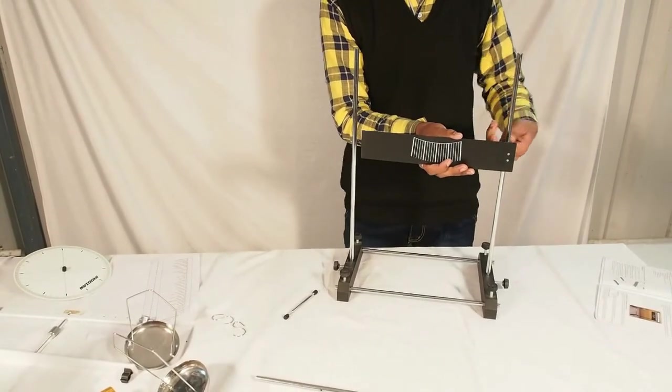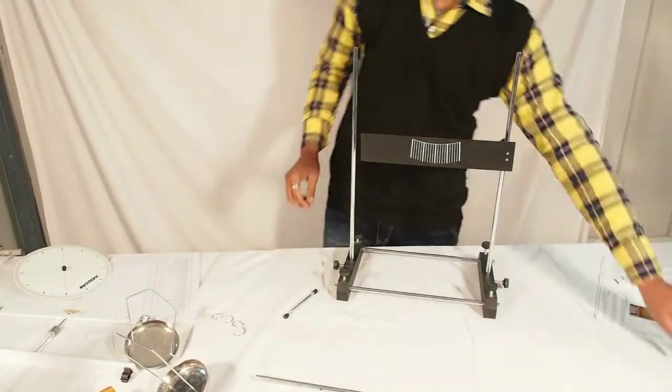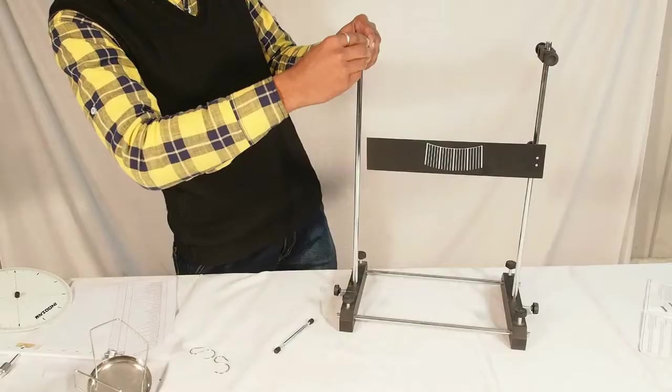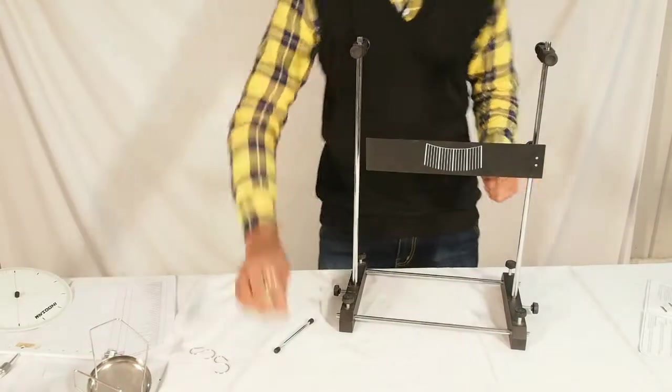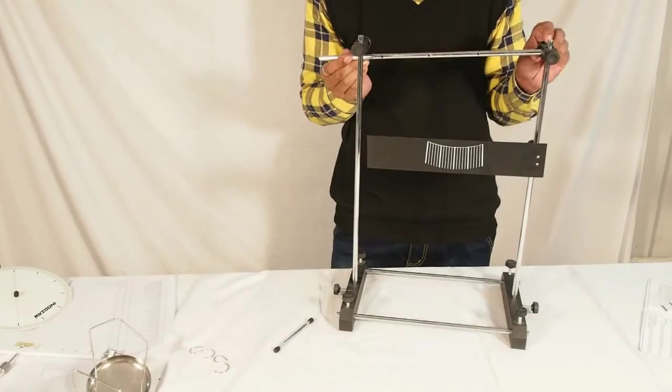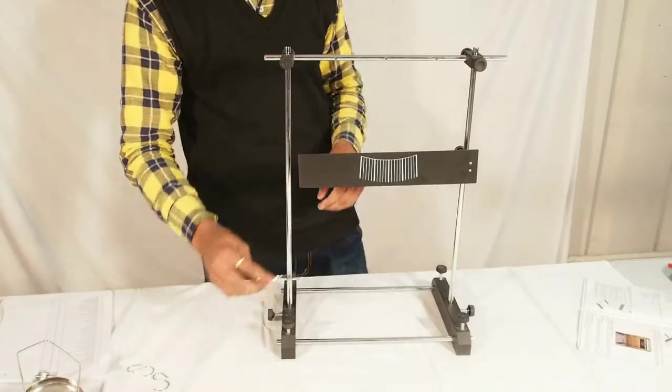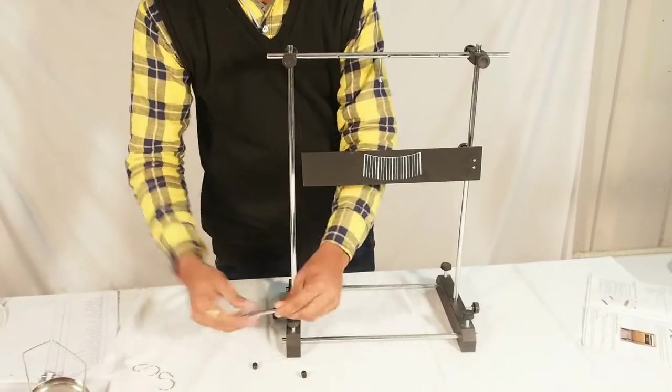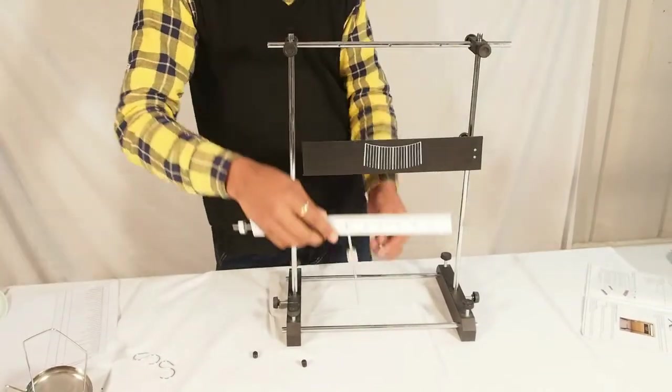Attach the double scale with boss head to the right hand rod. The height is not important, it can be adjusted later. Attach two boss heads to the top of the two rods. Now place the 40 centimeter rod with hole so that it is held by two boss heads.